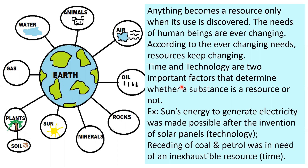So the use of a substance differs from place to place, time to time, and person to person. For example, sun's energy to generate electricity was made possible only after the invention of solar panels. So only after the invention of the solar panel, solar energy has become a resource for us.